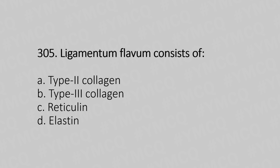Question 305: Ligamentum flavum consists of — Option A: type 2 collagen. Option B: type 3 collagen. Option C: reticulin. Option D: elastin. The answer is Option D, elastin.